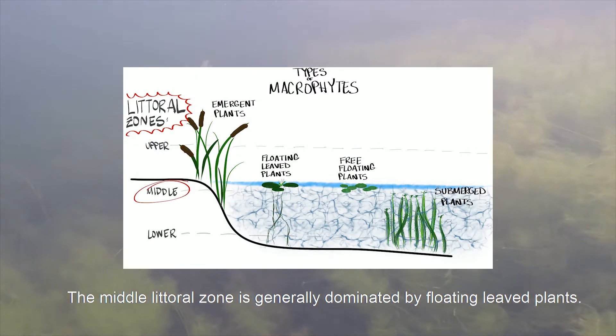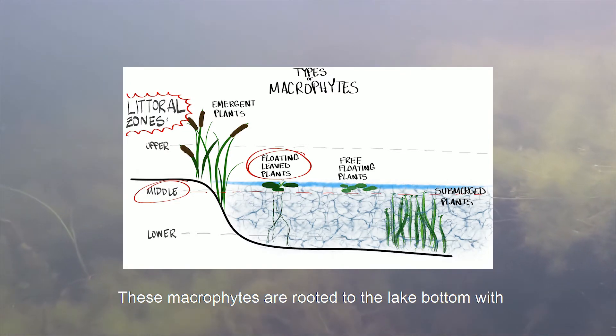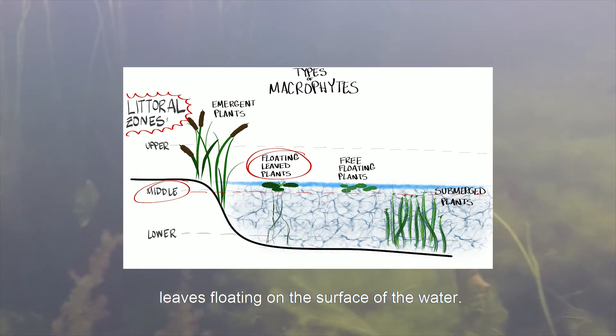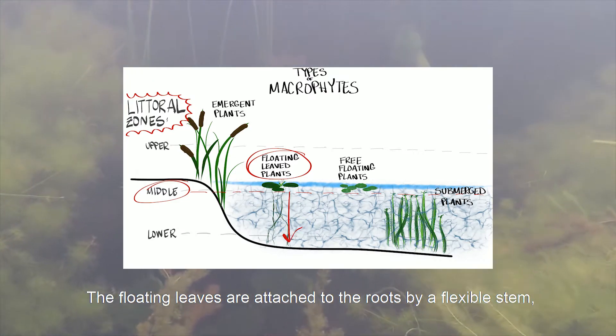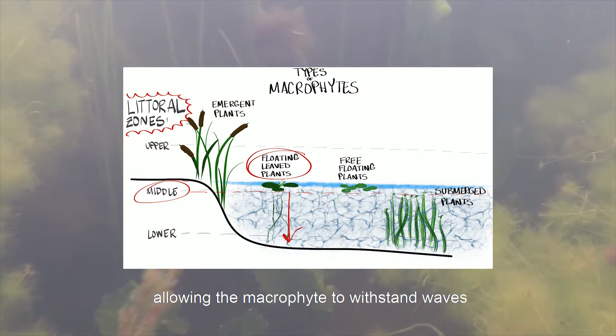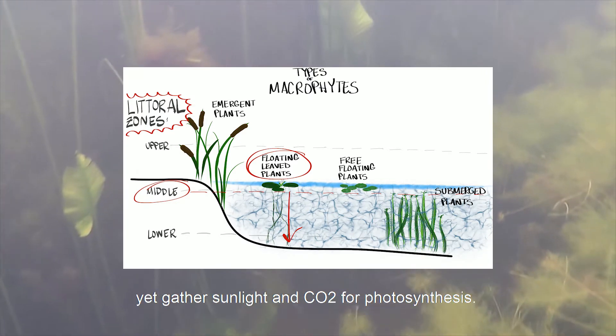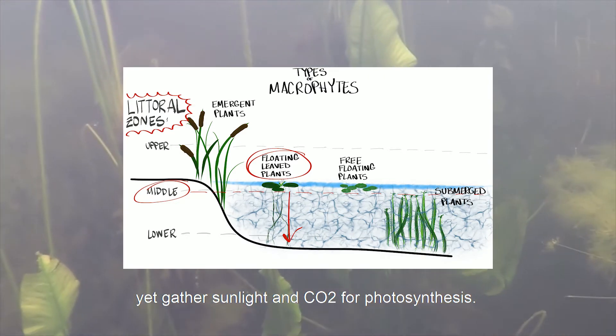The middle littoral zone is generally dominated by floating leaved plants. These macrophytes are rooted to the lake bottom with leaves floating on the surface of the water. The floating leaves are attached to the roots by a flexible stem allowing the macrophytes to withstand waves yet gather sunlight and CO2 for photosynthesis.